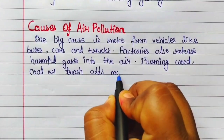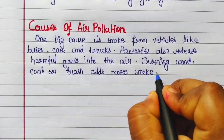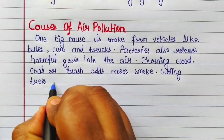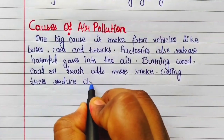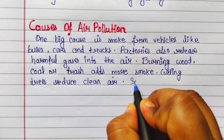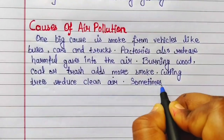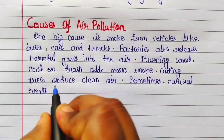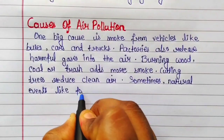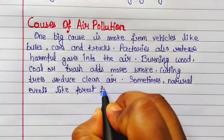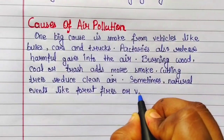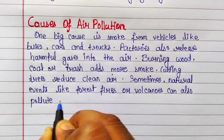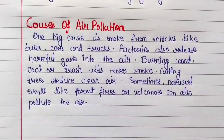Burning wood, coal or grass adds more smoke. Cutting trees reduces clean air. Sometimes natural events like forest fires or volcanoes can also pollute the air.